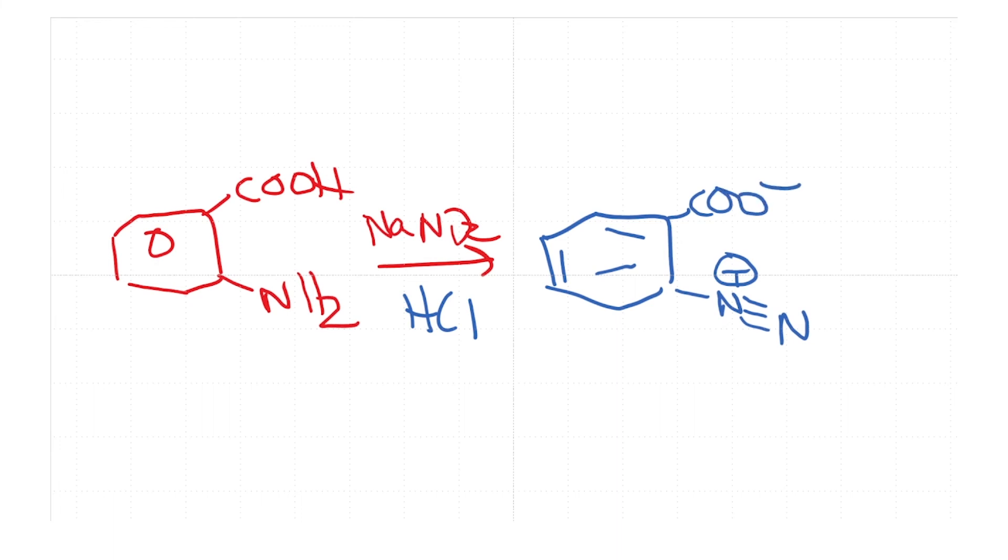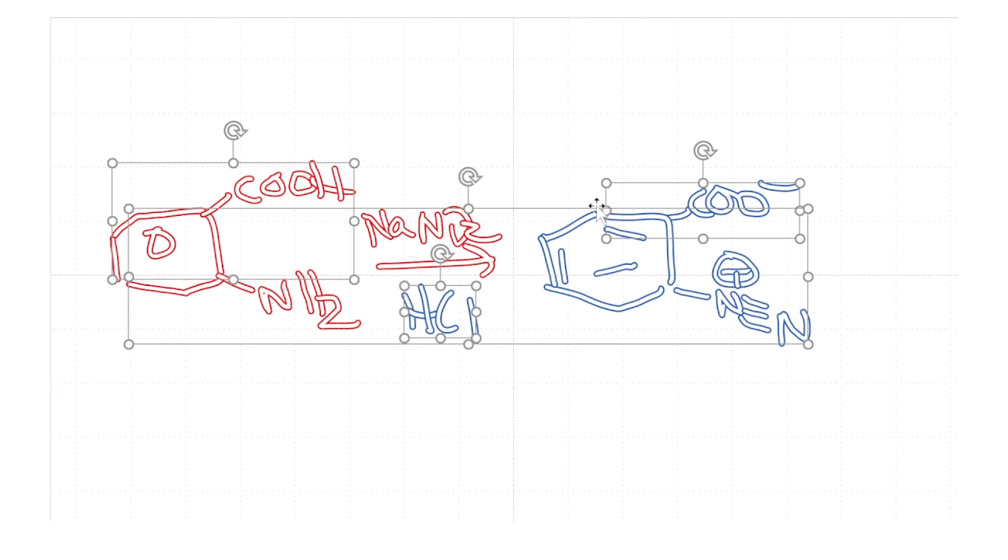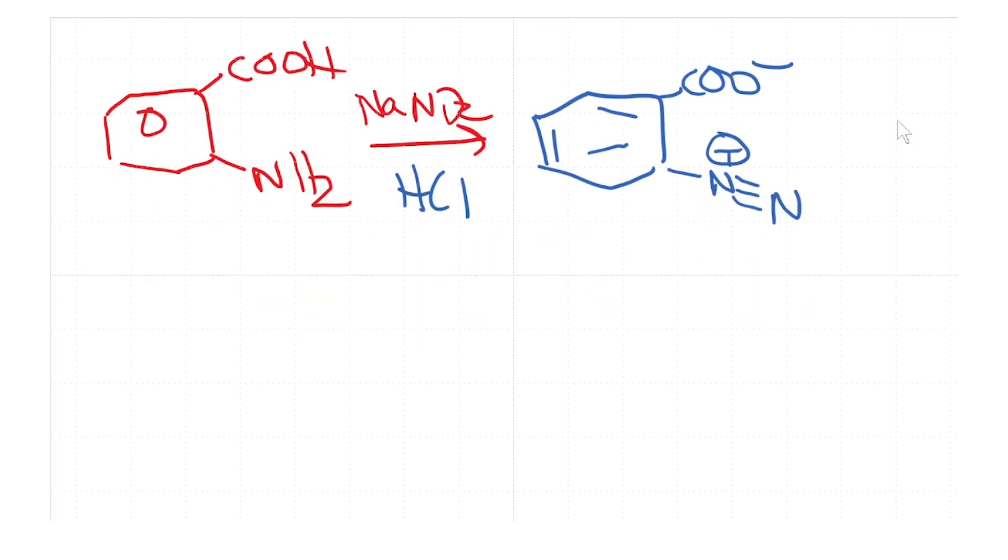So if you generate this under the appropriate conditions, then what you could do is you could then add base OH minus and what it does is it converts this carboxylic acid to the COO minus. So you have the formation of COO minus and N triple bound N plus.